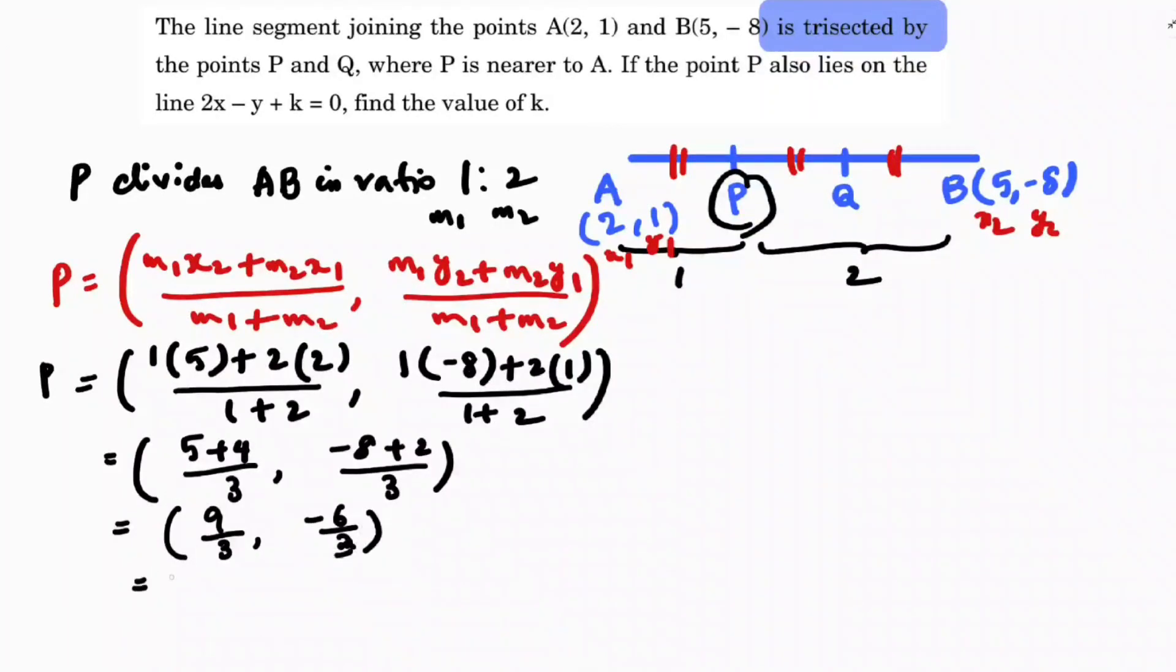So the point P is (3, -2). Now this point P(3, -2) lies on the line 2x - y + k = 0. This is the x value and this is the y value. If I substitute: 2 times 3 minus y, which is -2, plus k equals 0.